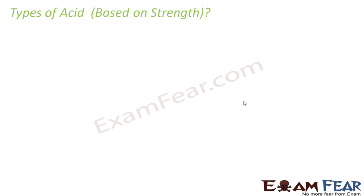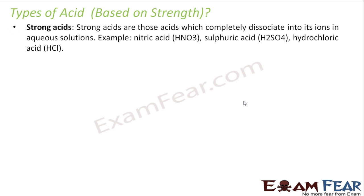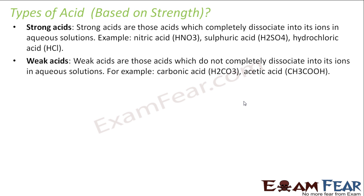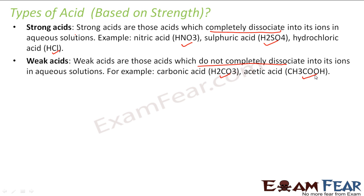Let's discuss types of acids based on strength. Based on strength, we have strong acids and weak acids. Strong acids are those which completely dissociate into ions in aqueous solution. Weak acids do not completely dissociate. For example, strong acids are nitric acid, sulfuric acid, and hydrochloric acid. Weak acids are carbonic acid and acetic acid.